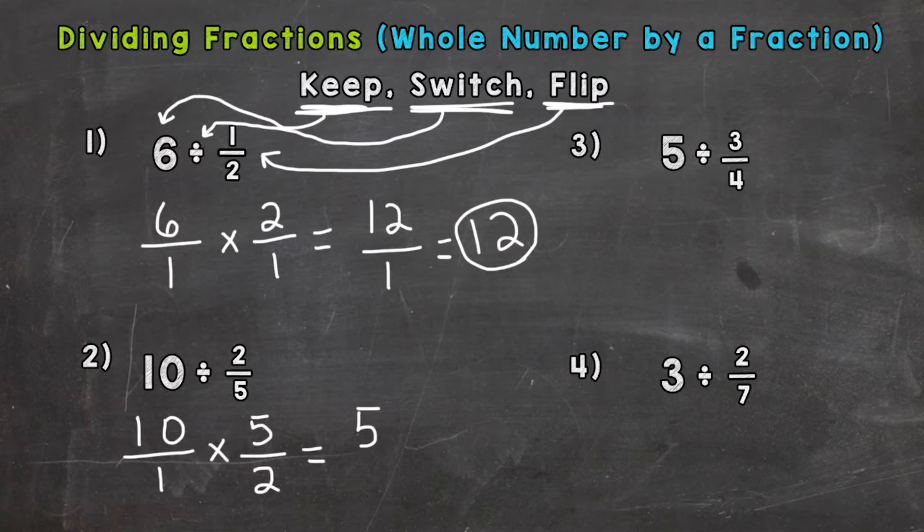10 times 5 is 50, and 1 times 2 is 2. So we have 50/2, or 50 over 2. Now that's an improper fraction. Our numerator is greater than the denominator. So we need to convert it to a mixed number or whole number, depending on how things work out. So we need to do 50, the numerator, divided by the denominator. 50 divided by 2.